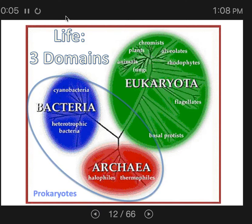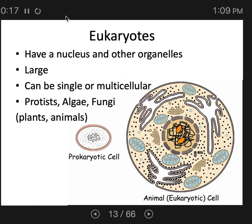We just covered the first two domains of life, which collectively are known as prokaryotes because of how they look — small, no nucleus. Now let's move on to the third: eukaryotes. Eukaryotes have a nucleus and all the other organelles. They are complex and large relative to prokaryotes. They can be single or multicellular, whereas prokaryotes are too simple to ever form multicellular organisms.